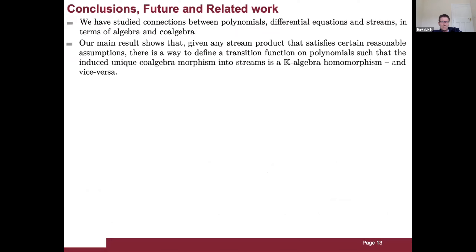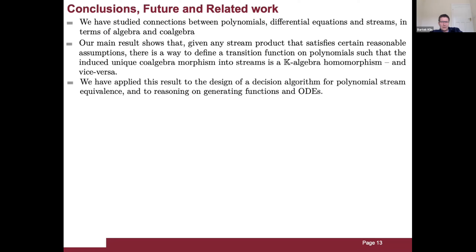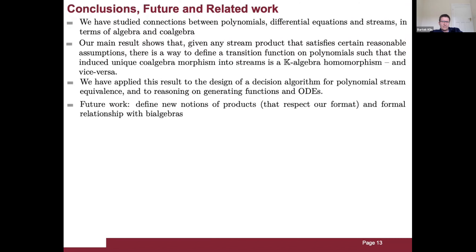Our main result is a full abstraction result: given any stream product satisfying certain reasonable assumptions, there is a canonical way to define a derivative on polynomials such that the induced unique coalgebra morphism into streams is also a k-algebra homomorphism and vice versa. We used this for developing a decision algorithm for polynomial stream equivalence and for reasoning on generating functions and ordinary differential equations. As future work, it would be interesting to define new notions of stream products respecting our format and to formally compare our results with those obtained in B-algebras.